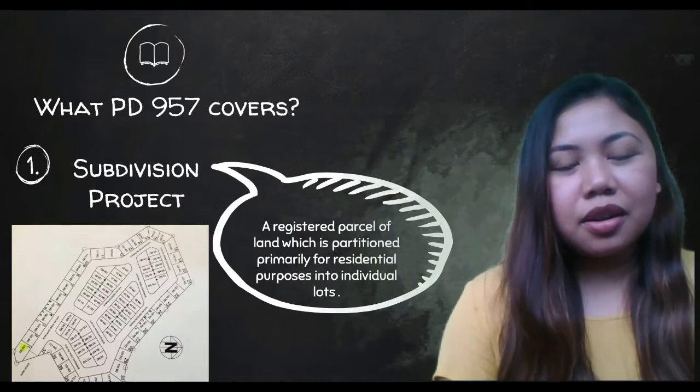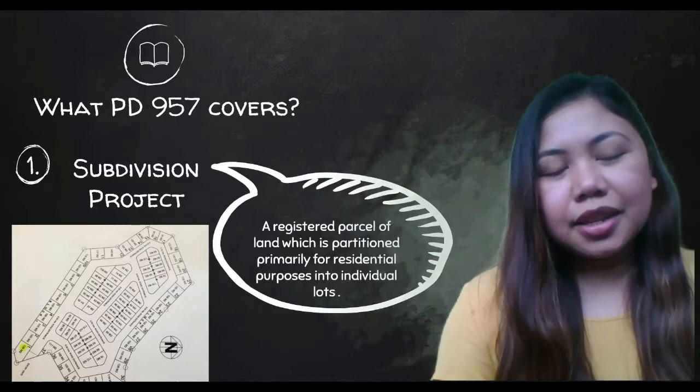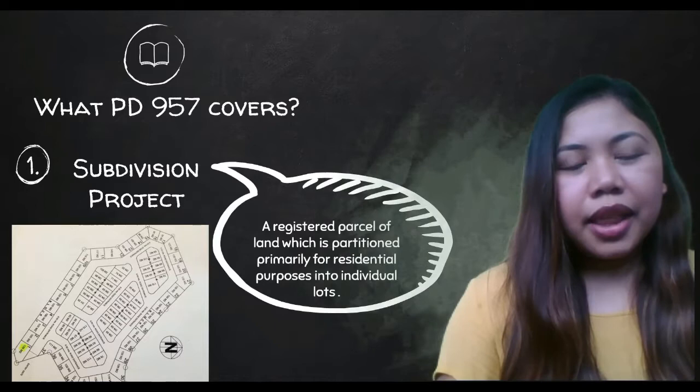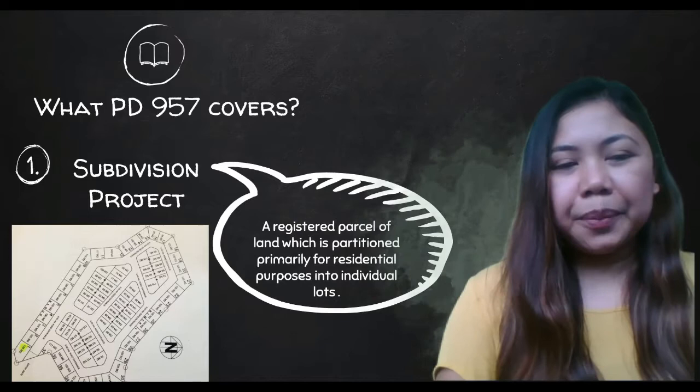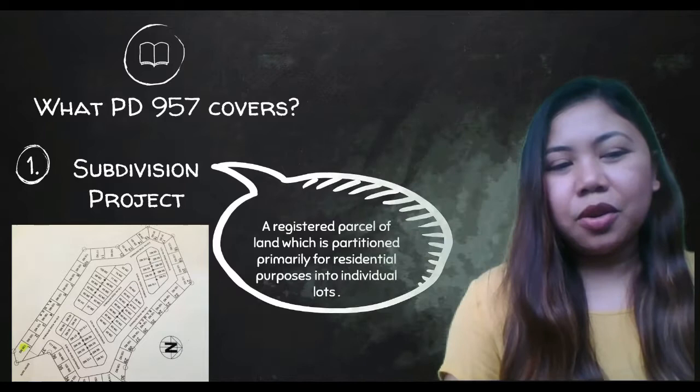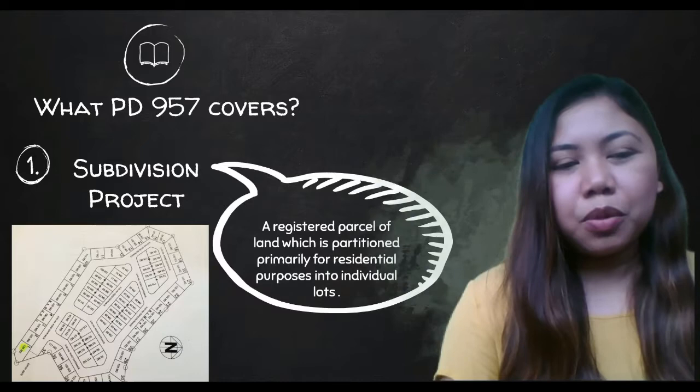So you hire a surveyor who would subdivide the lots into smaller lots, and you apply for a title for those individual lots — then it's ready for selling. You have to conform with what is written in this law in order to develop a subdivision.